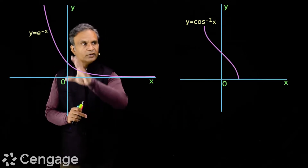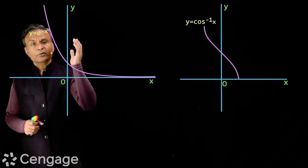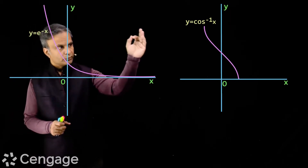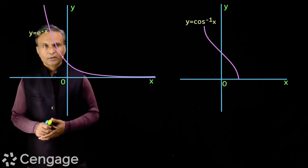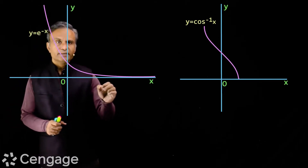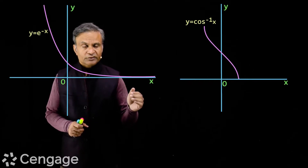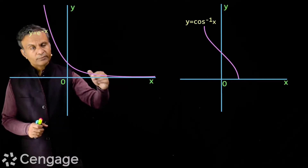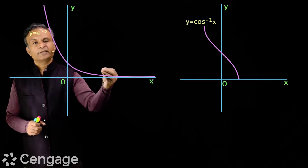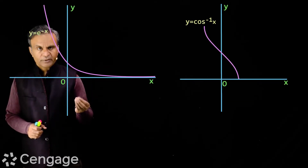Similarly, we have strictly decreasing and decreasing functions. We have graphs of y = e^(-x) and y = cos⁻¹x. In each case the function value decreases with increase in value of x — the function value decreases without repeating.